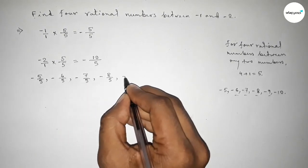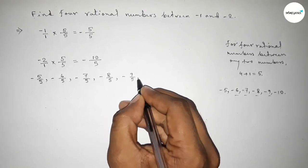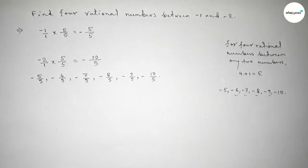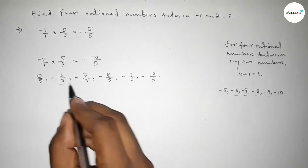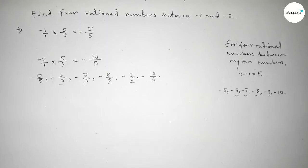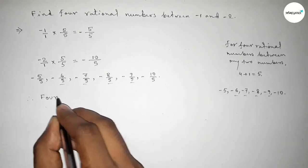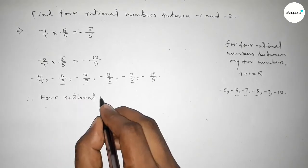Among these, these are the four required rational numbers between -1 and -2. You can find another rational number between -1 and -2 by a different method.